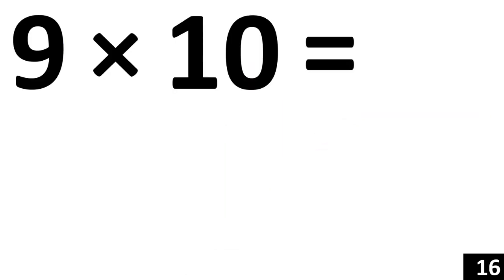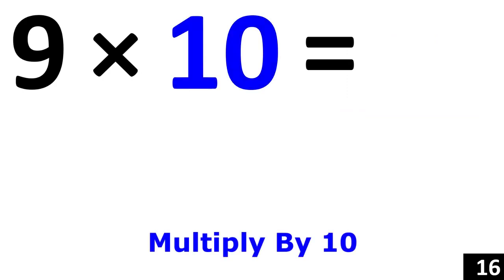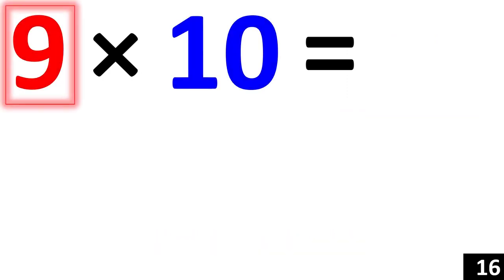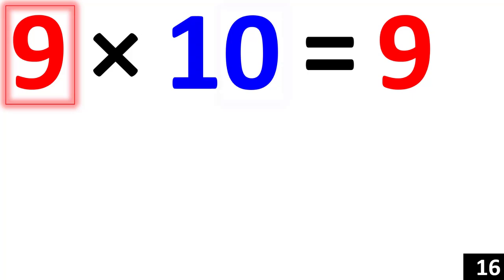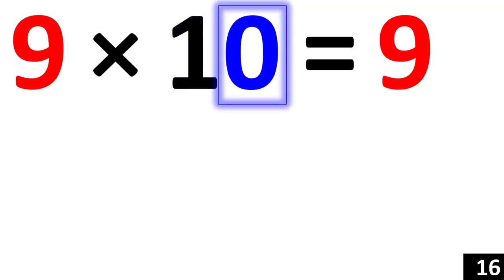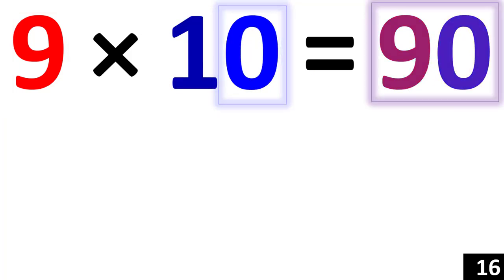For 9 times 10, we just use the rule of 10. So, 9 times 10 is a 9 with an added 0. That's 90.